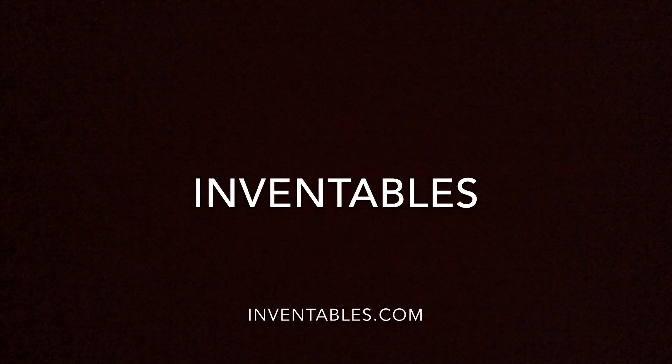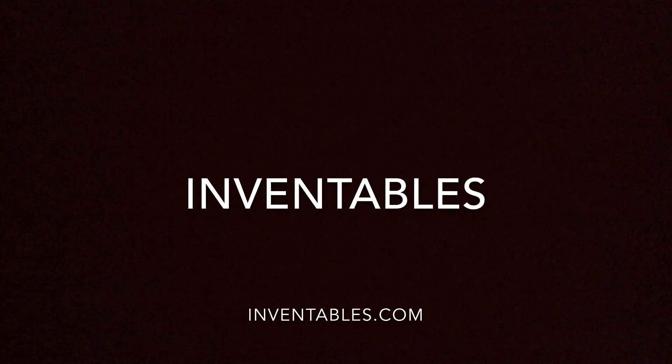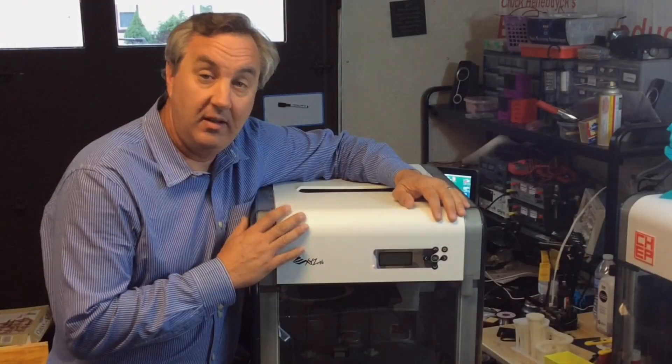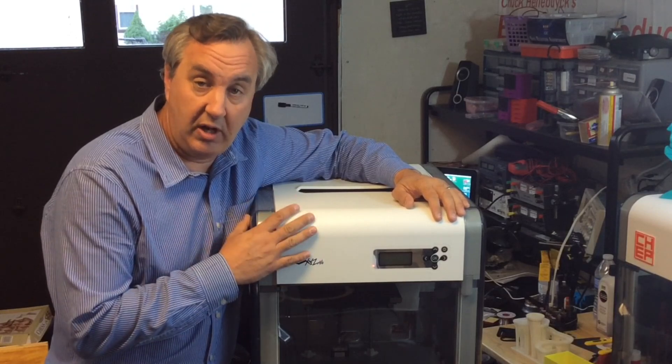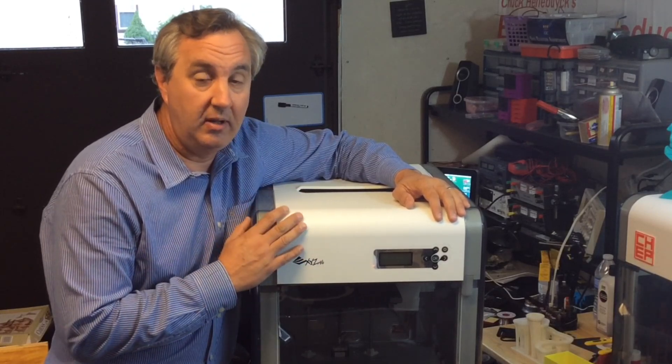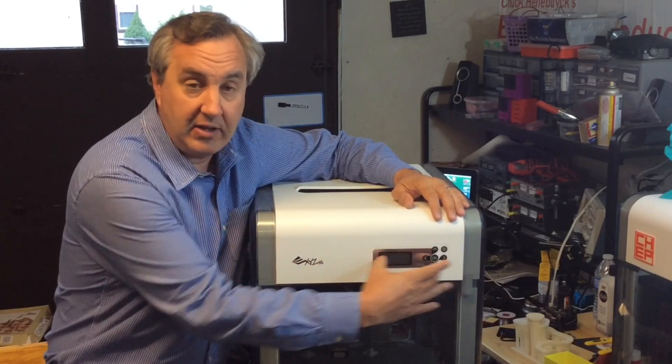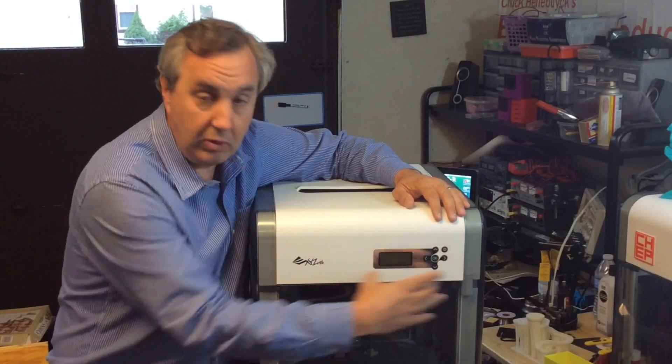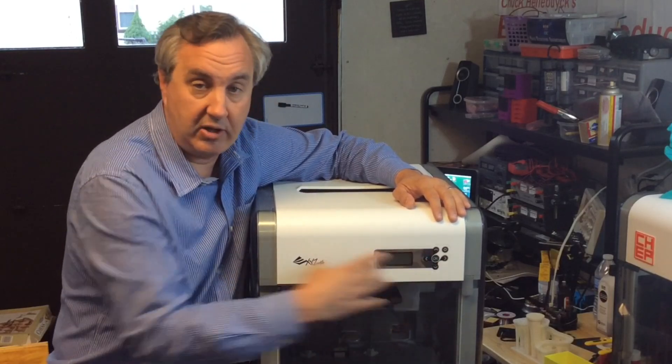This video is sponsored by Inventables. The 0030 error that was on this machine is actually pretty common. It's an error code for the x-axis. The extruder can't move properly in the x-direction.